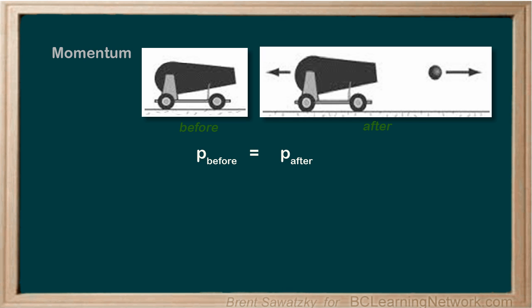Looking at the momentum before, we'd be looking at the combined masses of the cannon and the cannonball together. But they're not moving. Nothing is moving before the explosion. The velocity is zero. Thus the momentum before the explosion has to be zero. This might seem strange at this point but let's continue. So on the right hand side, that is after the explosion, let's see what we have here.